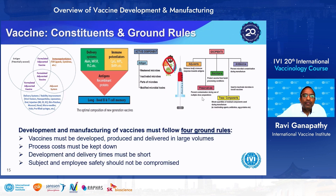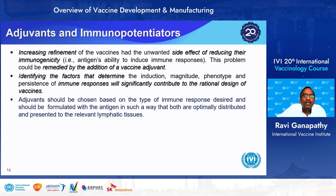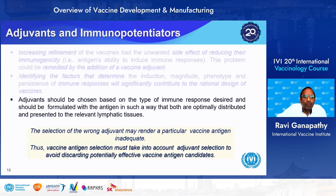During vaccine development and manufacturing, four ground rules must be kept in mind: vaccines must be developed, produced, and delivered in large volumes; process costs must be kept down; development and delivery times must be short; and subject and employee safety should not be compromised. Adjuvants improve vaccines but, due to increasing refinement toward subunit vaccines, there is reduced immunogenicity. This can be remedied by adding an adjuvant — a substance added to a vaccine formulation that enhances the desired immune responses. However, the wrong adjuvant may render a vaccine antigen inadequate, so antigen-adjuvant selection must be carefully considered.